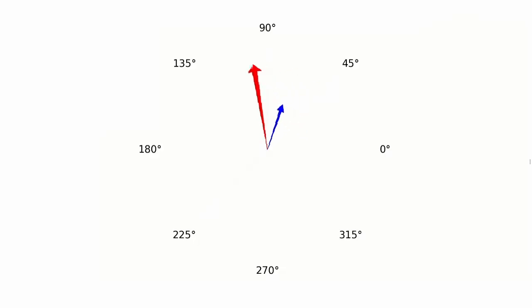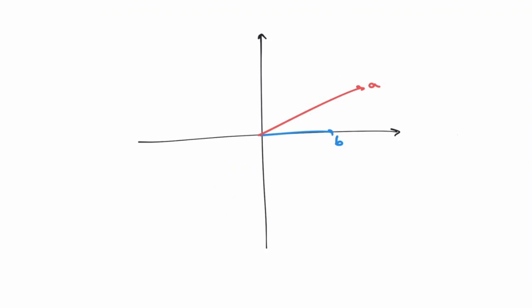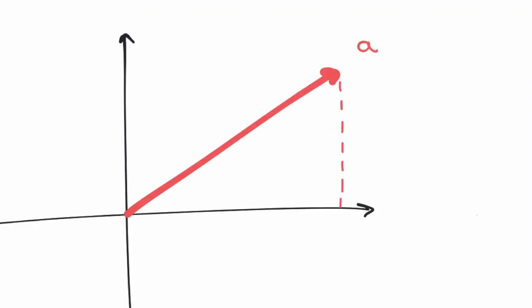You might notice that rotating the two vectors together about the origin doesn't change the actual angle between them. So we may as well rotate the vectors such that B lies on the horizontal axis. At this point, if you know trigonometry, it's pretty easy to get the answer.